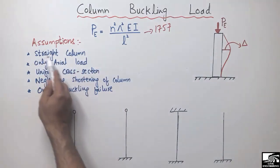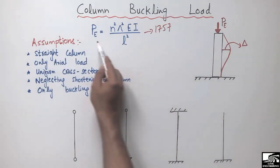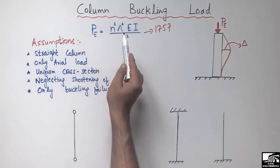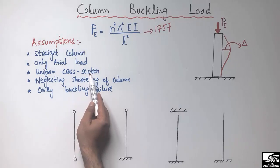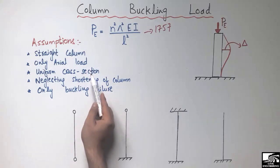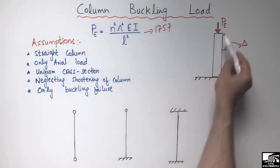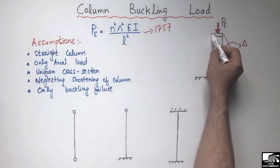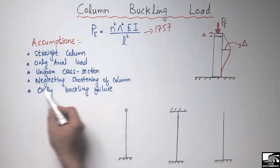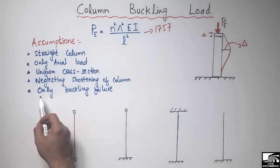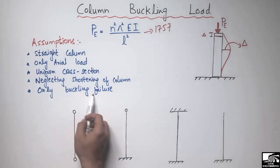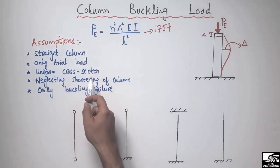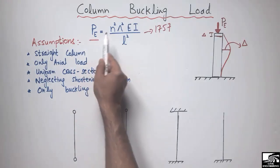The five assumptions are: first, the column should be straight; second, the load should be axial only, acting along the axis of the column; third, the column should have a uniform cross-section that does not change over its length; fourth, we neglect the shortening of the column due to the axial load; and fifth, the formula applies only when the column fails exclusively by buckling.